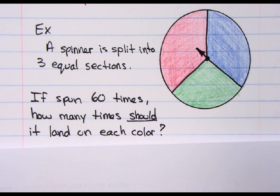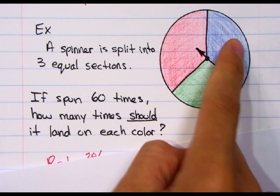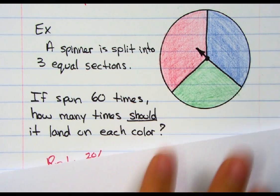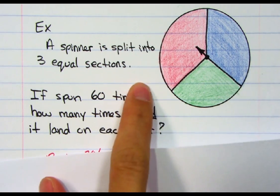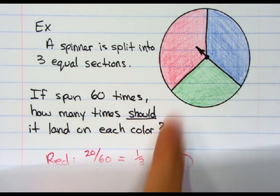In theory, you have a one-third chance to land on each one. That should mean if I spin it 60 times, a third of that should be red, a third blue, and a third green. That means 20 out of 60, 20 out of 60, and 20 out of 60.